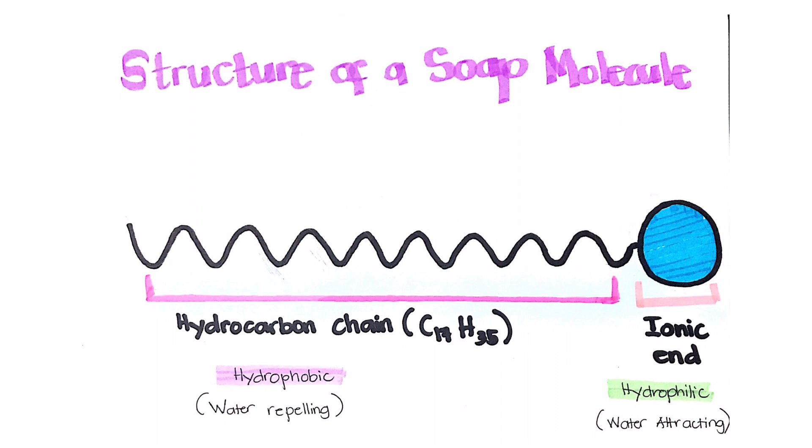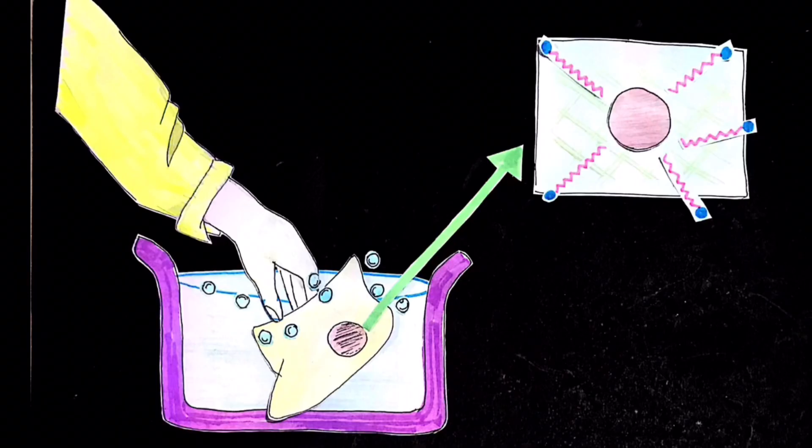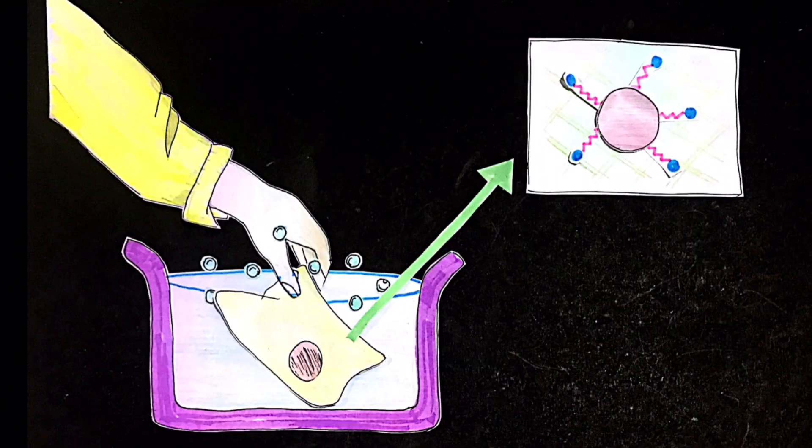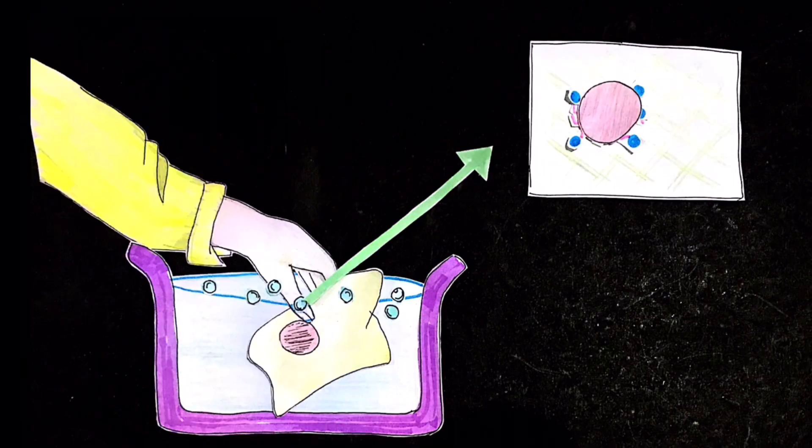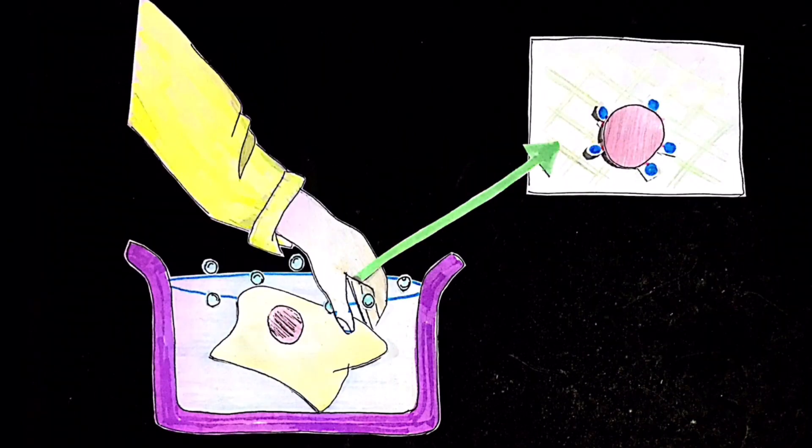The ionic end is hydrophilic or water-attracting. The hydrophilic part attracts water molecules and dissolves in water, while the hydrophobic part will attract grease and mix with particles of grease.